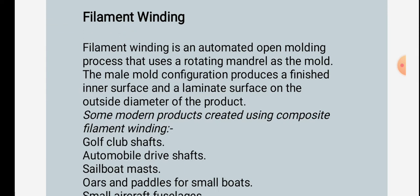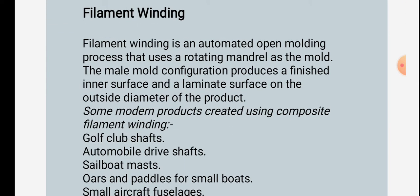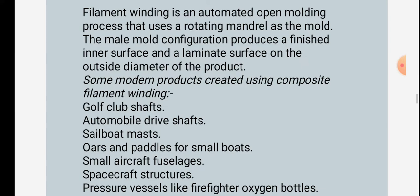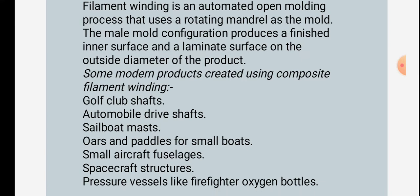Filament winding is an automated open molding process that uses a rotating mandrel as the mold. The male mold configuration produces a finished inner surface and a laminate surface on the outer diameter of the product. Modern products created using composite filament winding include golf shafts, automobile drive shafts, and sailboat masts.